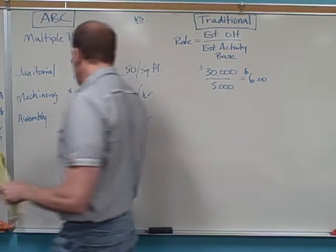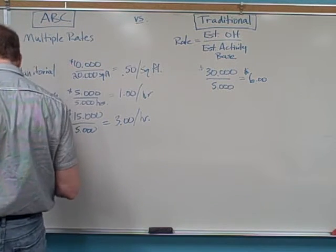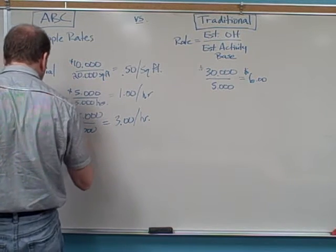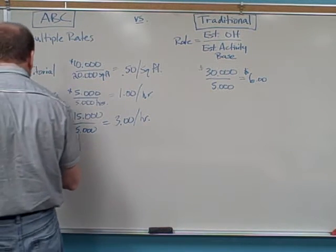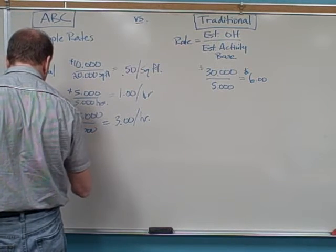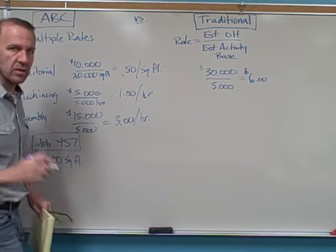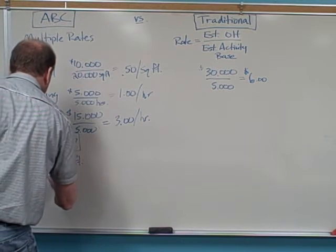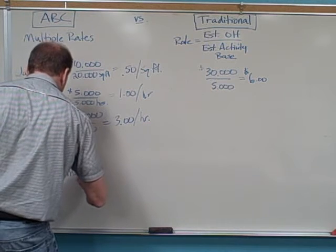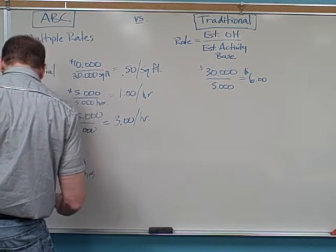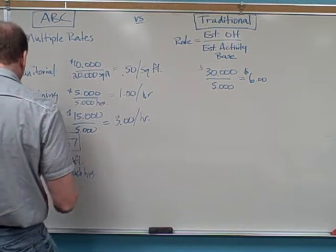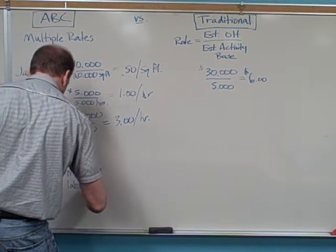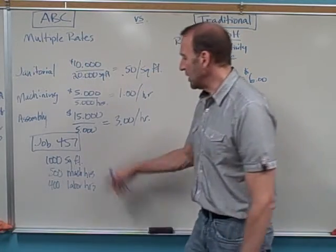Let's say that we have job number 457. And let's say that they have a thousand square feet. So this job is using a thousand square feet area. Let's say they have 500 machine hours. And let's say they have 400 labor hours. So this is what's taking place here.